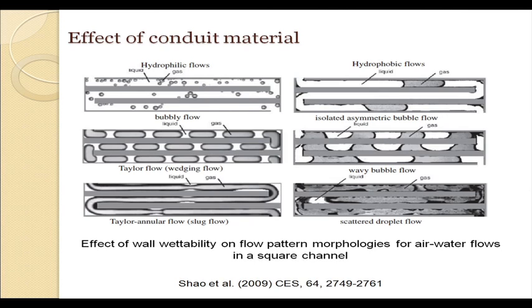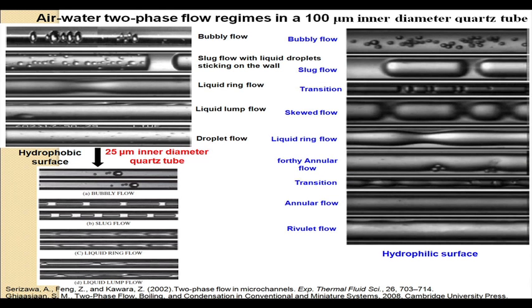This scattered droplet flow, where the liquid disperses as droplets and the gas forms an irregular core, resembles chaotic phenomena but is not the churn flow pattern. Although this is some sort of instability, it has no parallel to instabilities in macro flows. This sort of flow pattern is not observed for hydrophilic tubes, and in this case we find the pronounced effect of conduit material.